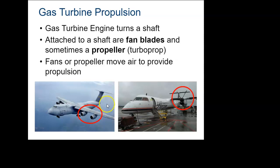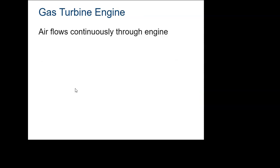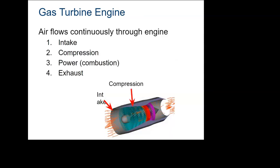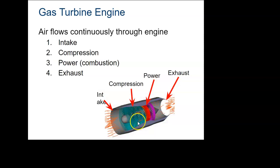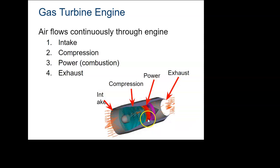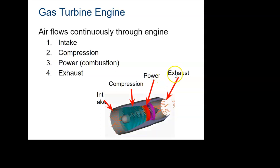A gas turbine in general is based on four things. The intake is where the air comes in — air is our working fluid. It's compressed, which changes the density, pressure, and temperature. The combustion chamber or burner is where fuel is added. And then there's exhaust or expansion. So: intake, compression, power or burning, and then exhaust or expansion.